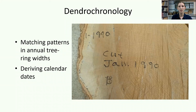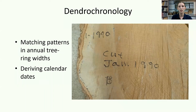Many of us have seen tree stumps or timbers with annual growth rings, and perhaps have even counted these rings to get an idea of the tree's age. Dendrochronology goes even further, striving to assign a calendar year to each ring and connect this with other data provided by the wood. Analysts do this by matching patterns in annual ring widths to the patterns in calendar-dated specimens, a process called cross-dating.